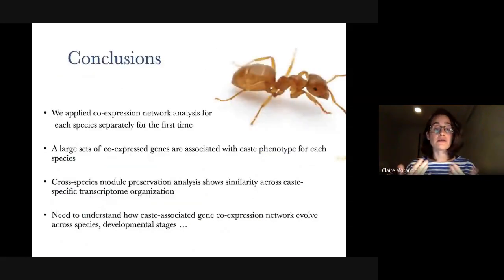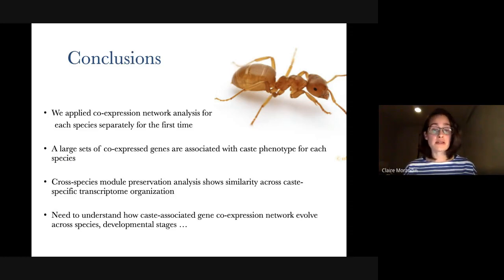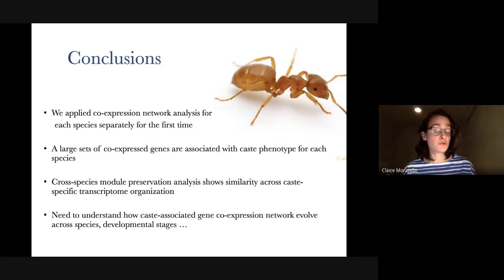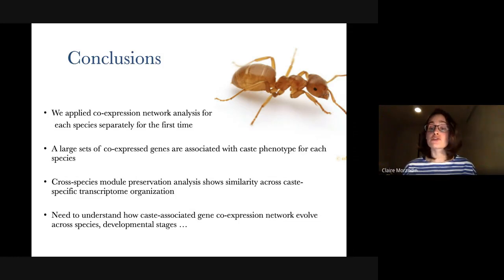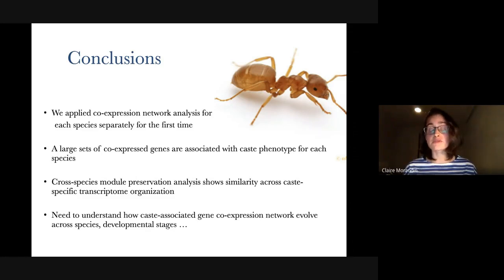This is the first study where we can actually compare networks for species independently. We find sets of co-expressions associated with each phenotype and some similarity across caste-specific transcriptome organization. But the next step — because there is always a next step — is to understand how caste-associated gene co-expression networks evolve across species, across tissues, and during development. This will be very important to model the changes we see across all of these species.